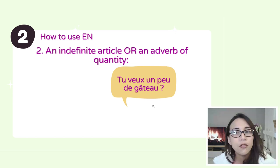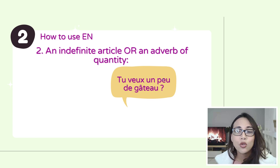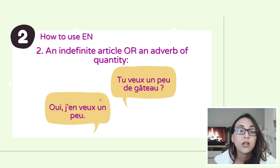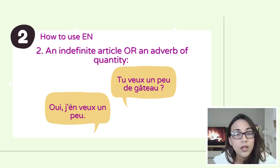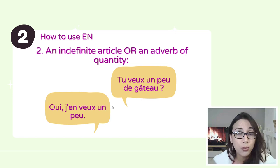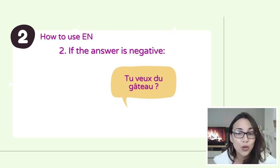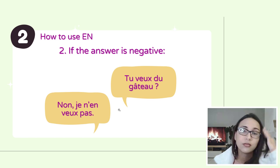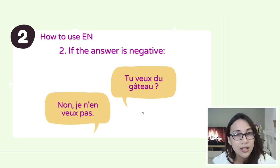In the case of an adverb of quantity, for example: tu veux un peu de gâteau? Oui, j'en veux un peu. You can choose to repeat un peu. If you simply say j'en veux, it means 'yeah, I want some,' but if you say j'en veux un peu, it means 'I want a little bit.' If the answer is negative: tu veux du gâteau? Non, je n'en veux pas. Tu as un vélo? Non, je n'en ai pas. The pattern is: n'en + verb + pas.